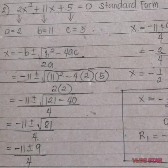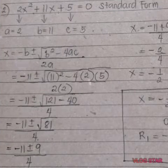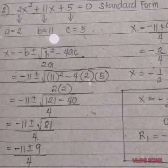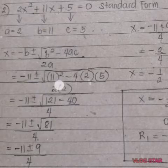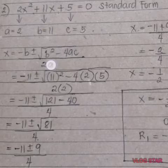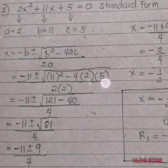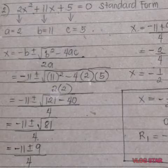And then substitute. The negative in the formula times the value of b, which is 11, gives negative 11. Plus or minus the square root of the value of b, which is 11, squared — because in the formula we have to square the b — minus 4 times the value of a, which is 2, and then the value of c, which is 5, all over 2 times the value of a, which is 2.